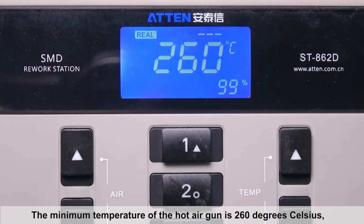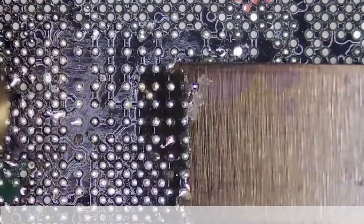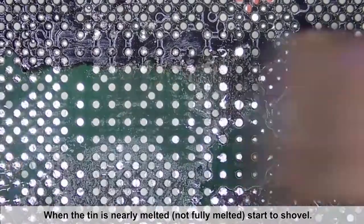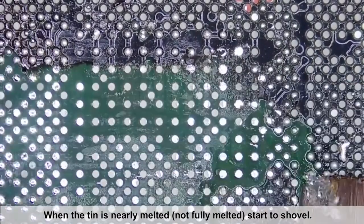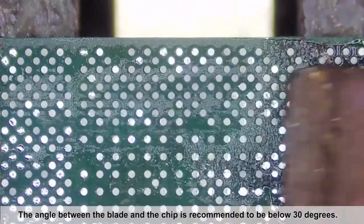The minimum temperature of the hot air gun is 260 degrees Celsius, the wind speed is the highest. When the tin is nearly melted, not fully melted, start to shovel. The angle between the blade and the chip is recommended to be below 30 degrees.